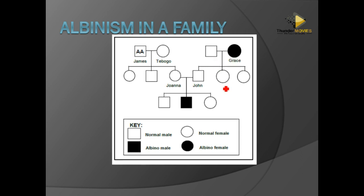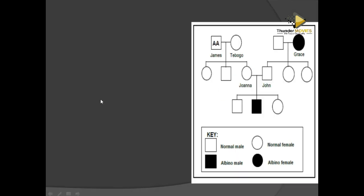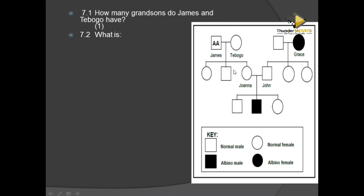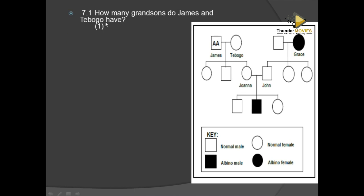If they were heterozygous, they would have produced at least one sick child. Regarding the question: how many grandsons do John and Teboho have? Looking at the first, second, and third generations, the grandsons are in the third generation. Counting them, there are two. So the answer is two grandsons.